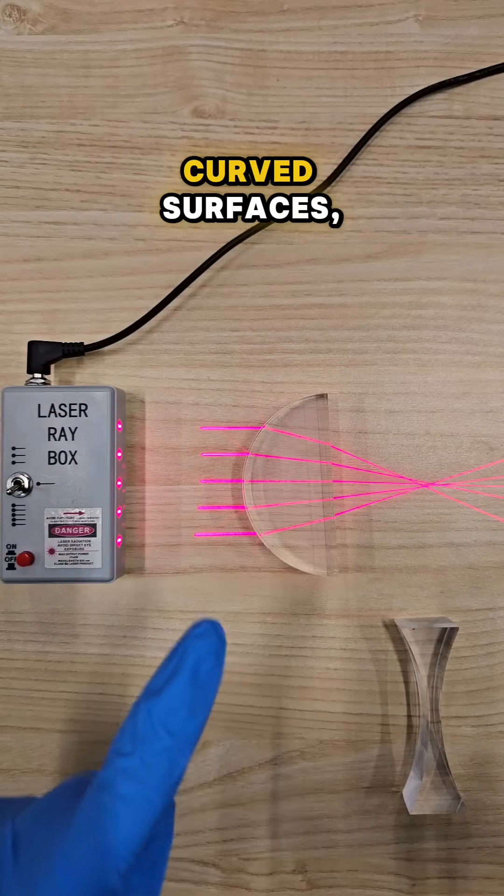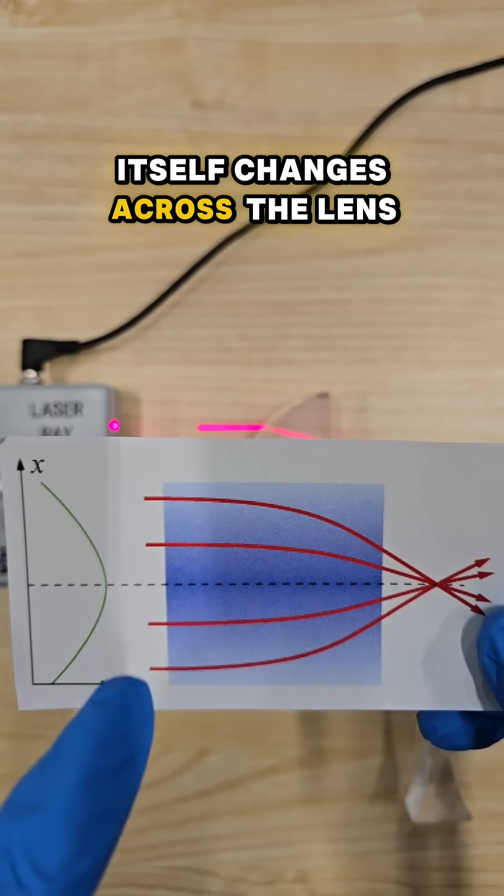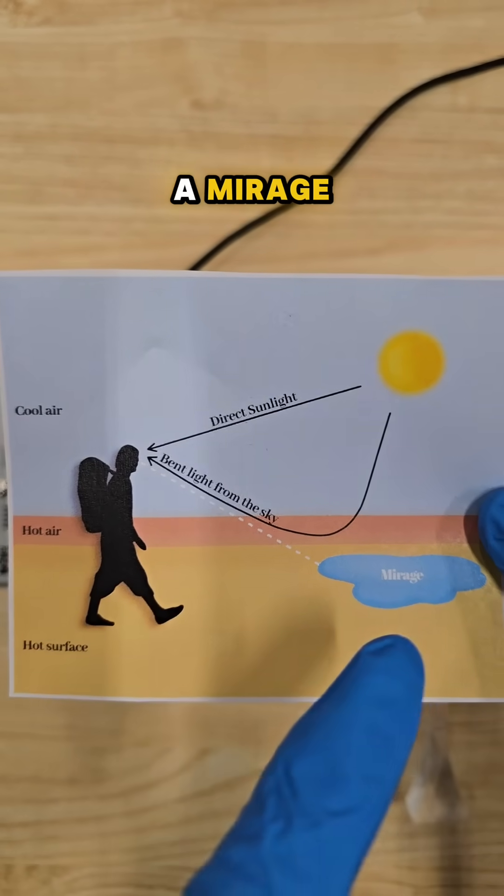Rather than bending light with curved surfaces, the material of the lens itself changes across the lens. This is kind of like a mirage.